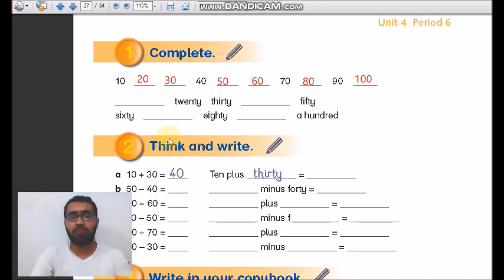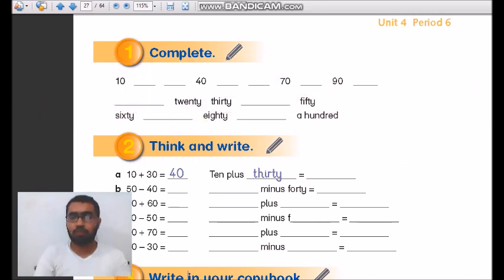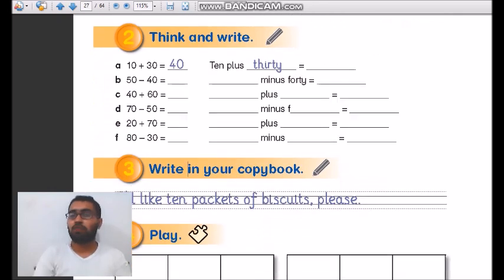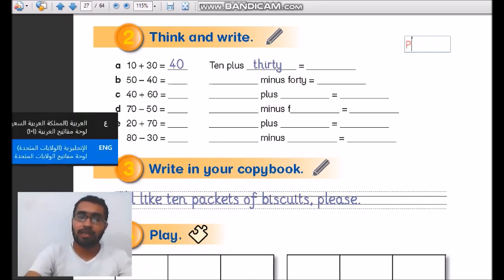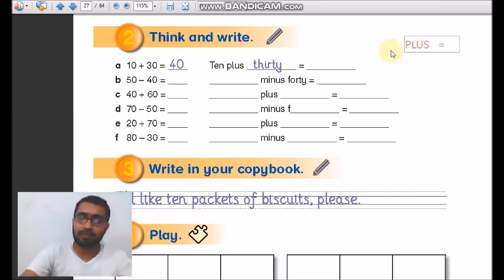The second exercise is think and write. Before we think and write anything, you have two operations. First one is plus, which means addition. The second word is minus, which means subtraction.